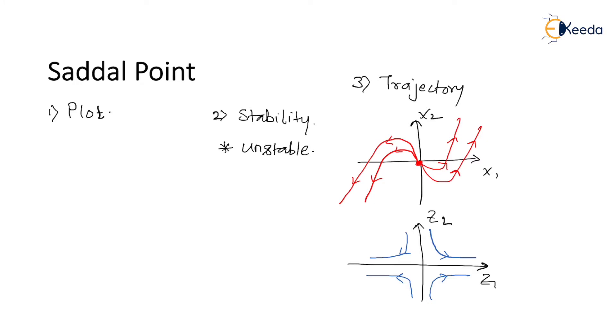The basic difference between nodal point and saddle point is that in the case of unstable node all the pole locations are on the RHS of the S plane.